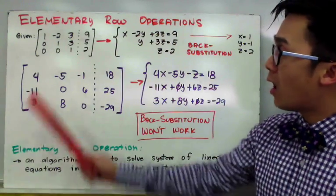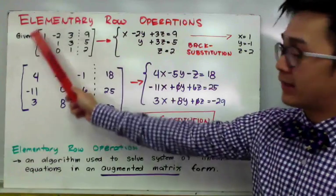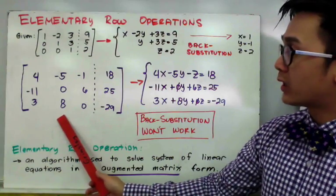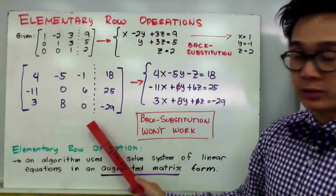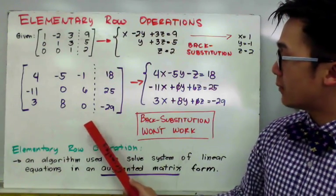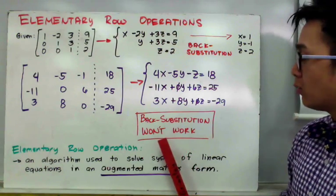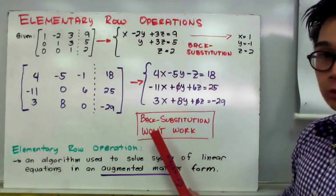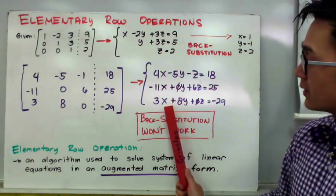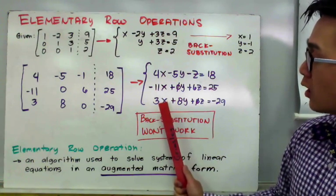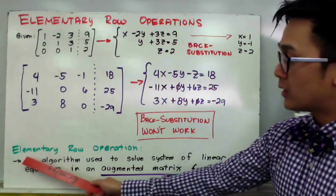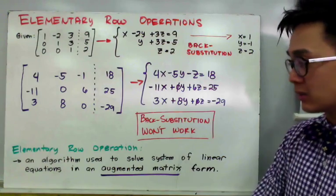However, not all augmented matrices are given like this. Most of the time, the matrix we are working on is similar to example number 2. In this augmented matrix, back substitution will no longer work to solve for the solutions of the linear system. So the other way to solve it is using elementary row operations, which is our lesson for today.